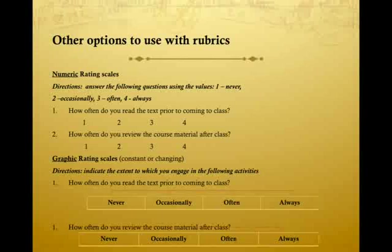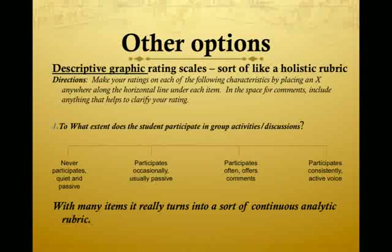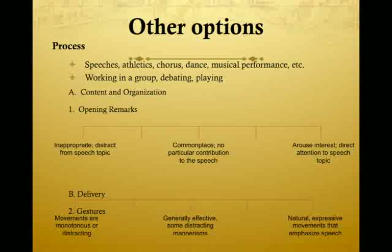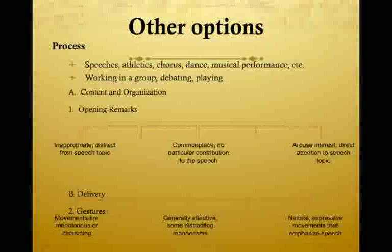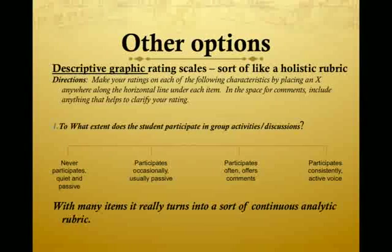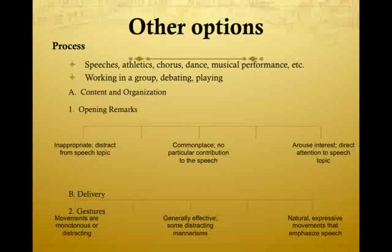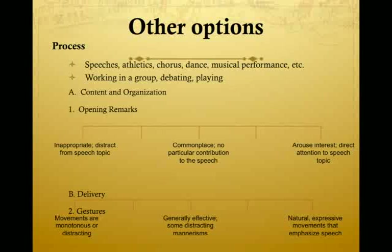There are more options for scoring rubrics and different rating scales, and there are a lot of ways you can go. You can have checklists, or you can have some kind of written rating scales or numeric rating scales. What you're trying to do is capture meaningful differences in performance and then figure out how you can use that to give students evidence of what they can and can't do, to inform parents, to help students improve their skills, and so on.